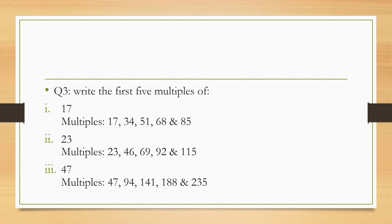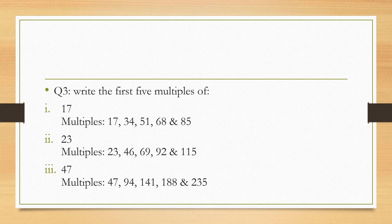Then number two, we have 23. Multiples of 23: 23, 46, 69, 92, and 115. Meaning 23 ones are 23, 23 twos are 46, 23 threes are 69, 23 fours are 92, 23 fives are 115.